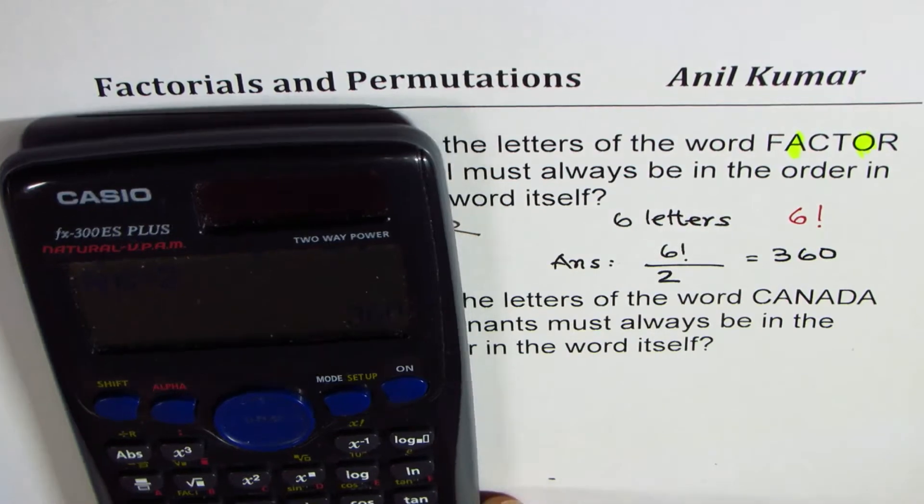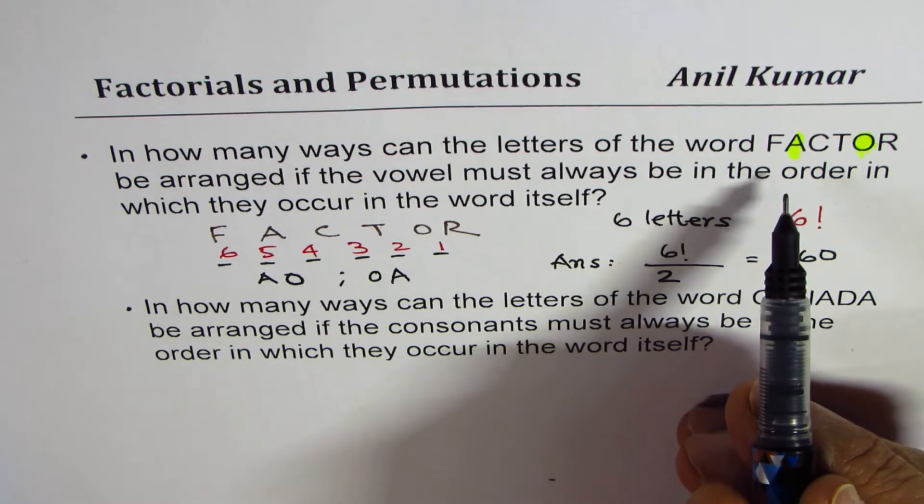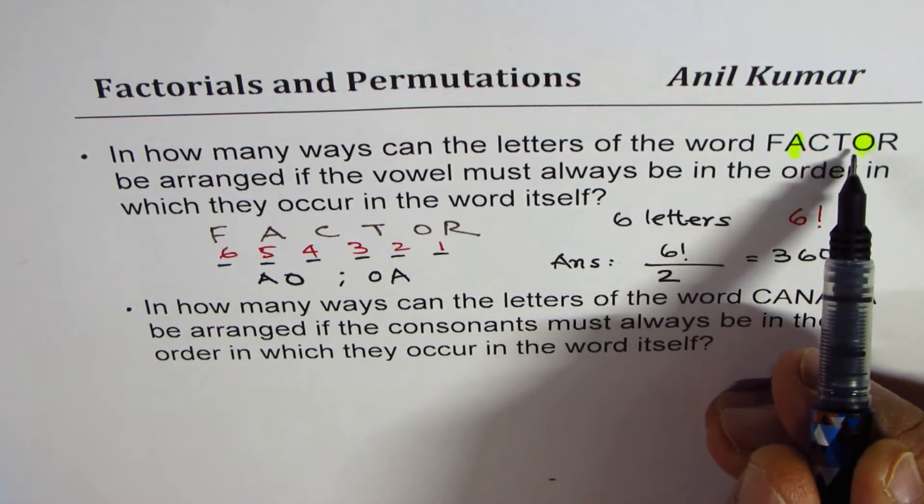So there are 360 ways in which we can arrange all these letters where A and O order is fixed.